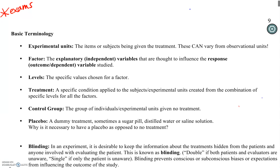The first definition is experimental units. Experimental units are the actual items or subjects that are being given the treatment. These can be different from our observational units — if you remember observational units from the homework, observational units are who we collect data from.